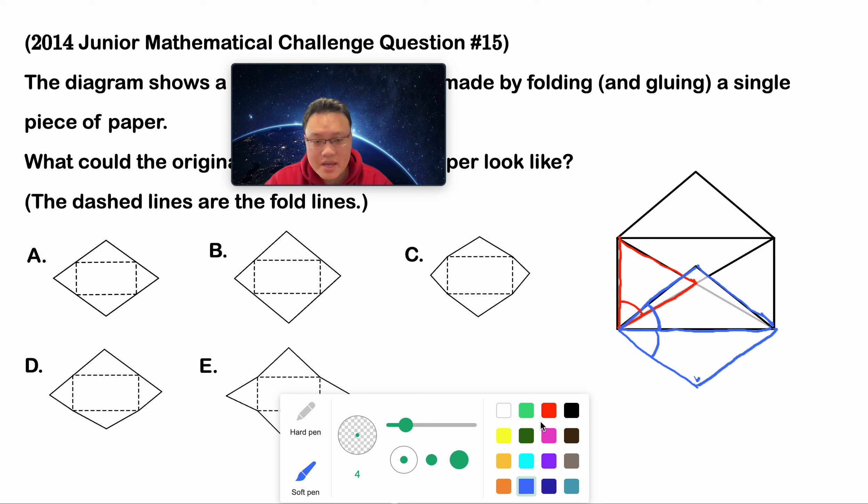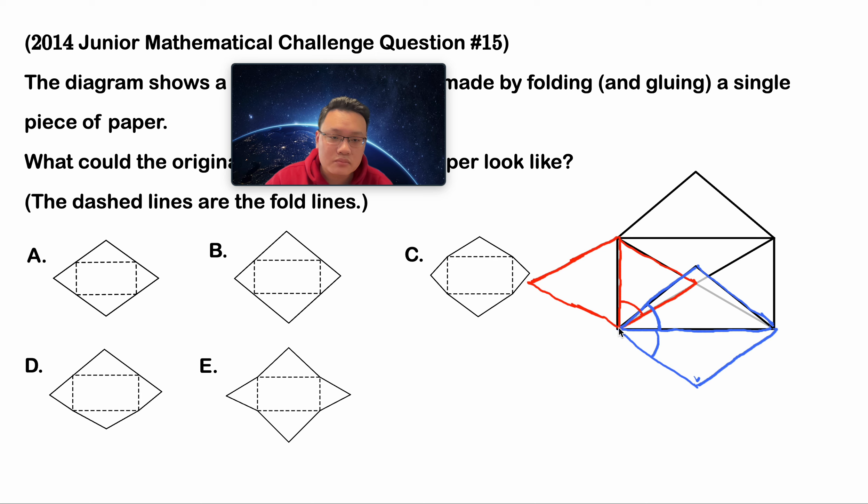So that means, if I unfold this red one, so this is the red angle over here. So the red plus this blue angle, and also you add that red angle over here will be larger than 180 degrees. So that means this line and this line, it cannot be a straight line.